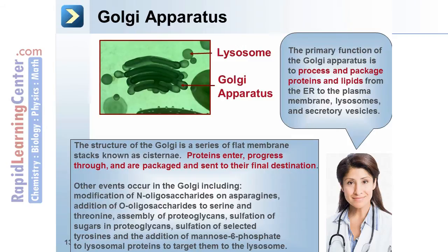As part of the primary function, a number of other events occur in the Golgi, including: modification of N-oligosaccharides on asparagines; addition of O-oligosaccharides to serine and threonine; assembly of proteoglycans; sulfation of sugars in proteoglycans; sulfation of selected tyrosines; and the addition of mannose-6-phosphate to lysosomal proteins to target them to the lysosome.